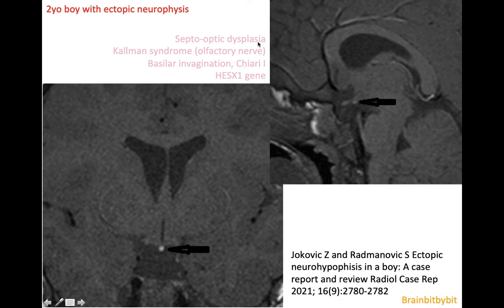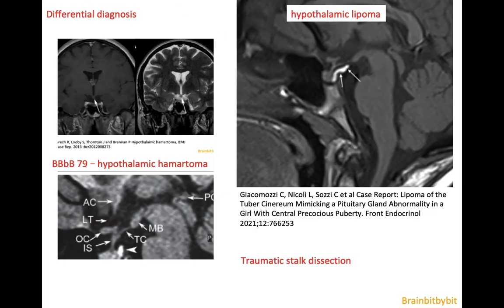Always check the midline structures. Several genes have been described, but the exact mechanism of pathogenesis is not yet known. In the differential diagnosis are the previously discussed hypothalamic hematoma, the very rare hypothalamic lipoma, and in adults you can think of traumatic stalk dissection either after high-impact trauma or post-surgical.